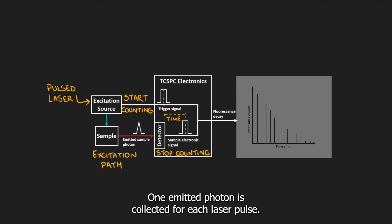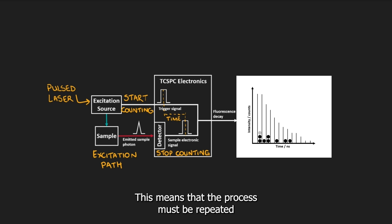One emitted photon is collected for each laser pulse. This means that the process must be repeated many thousands of times to build up a true statistical distribution for the sample.